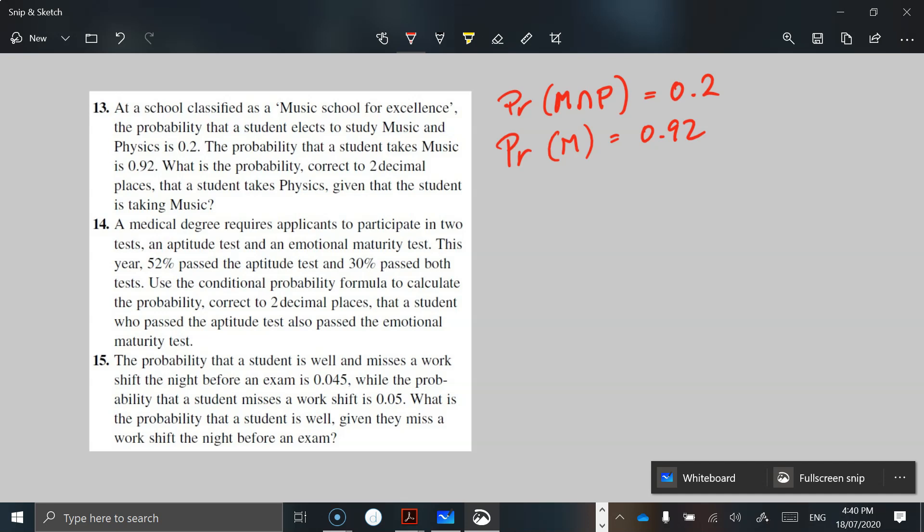So remember, we're wanting the probability of physics given they take music. The formula is going to be M and P, the two combined, the intersection of that, divided by the probability of M.